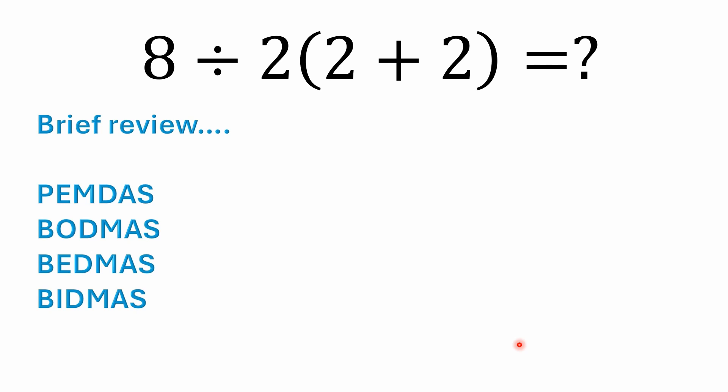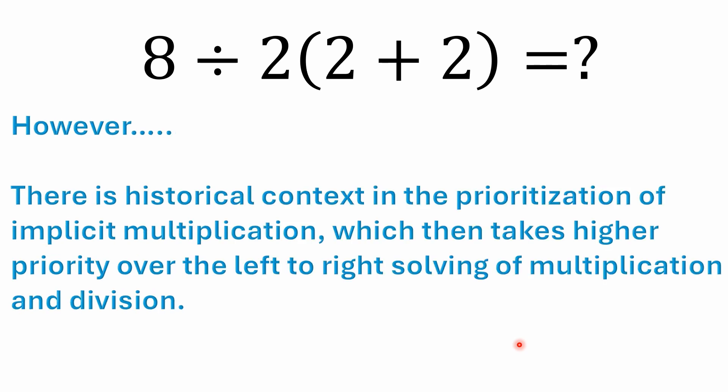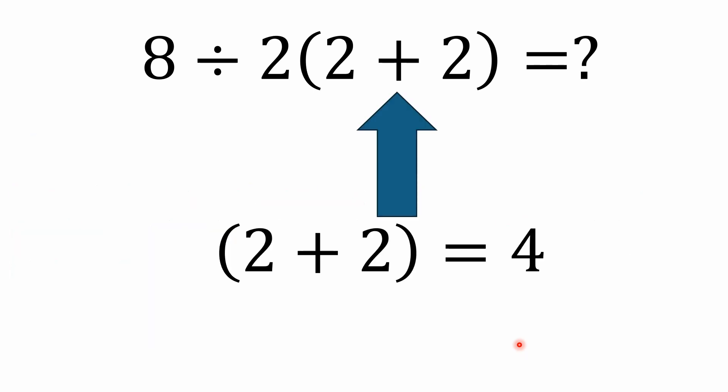There is historical context in the prioritization of implicit multiplication, which then takes higher priority over the left to right solving of multiplication and division. In both cases, whether you believe in implicit multiplication or not, you solve what's inside the parentheses first, which is the 2 plus 2. Two plus two is four, so regardless of what you believe or what you follow, that is always done first.